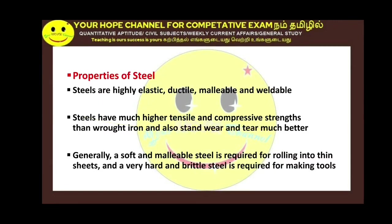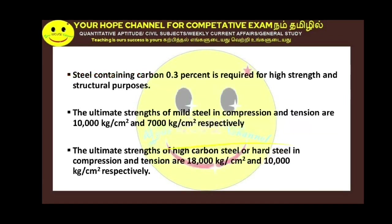Steel has the same compressive and tensile strength. Compared to wrought iron, steel stands wear and tear much better and has much higher tensile and compressive strength. Soft and malleable steel is required for rolling into thin sheets — used for corrugated sheets. If steel is very hard and brittle, it is used for tool making.